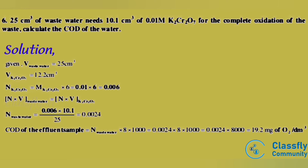Using N × V (waste water) = N × V (K2Cr2O7), we get N(waste water) = 0.06 × 10.1 / 25 = 0.0024. Therefore, COD of the effluent sample = N(waste water) × 8 × 1000 = 0.0024 × 8 × 1000 = 19.2 mg of oxygen per dm³.